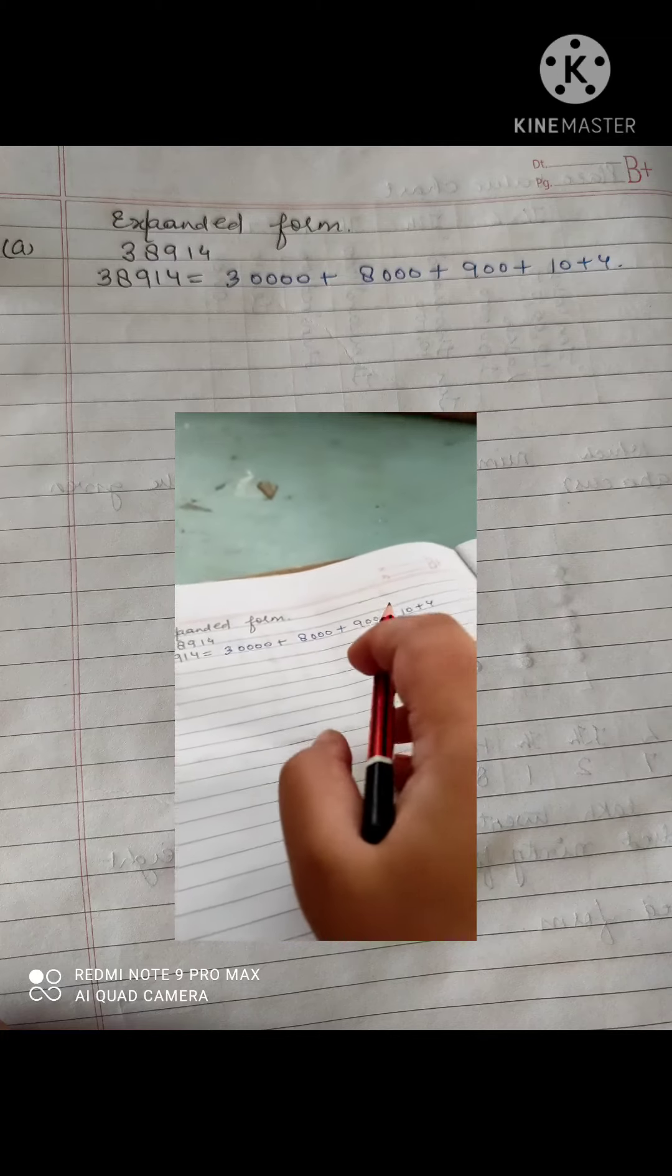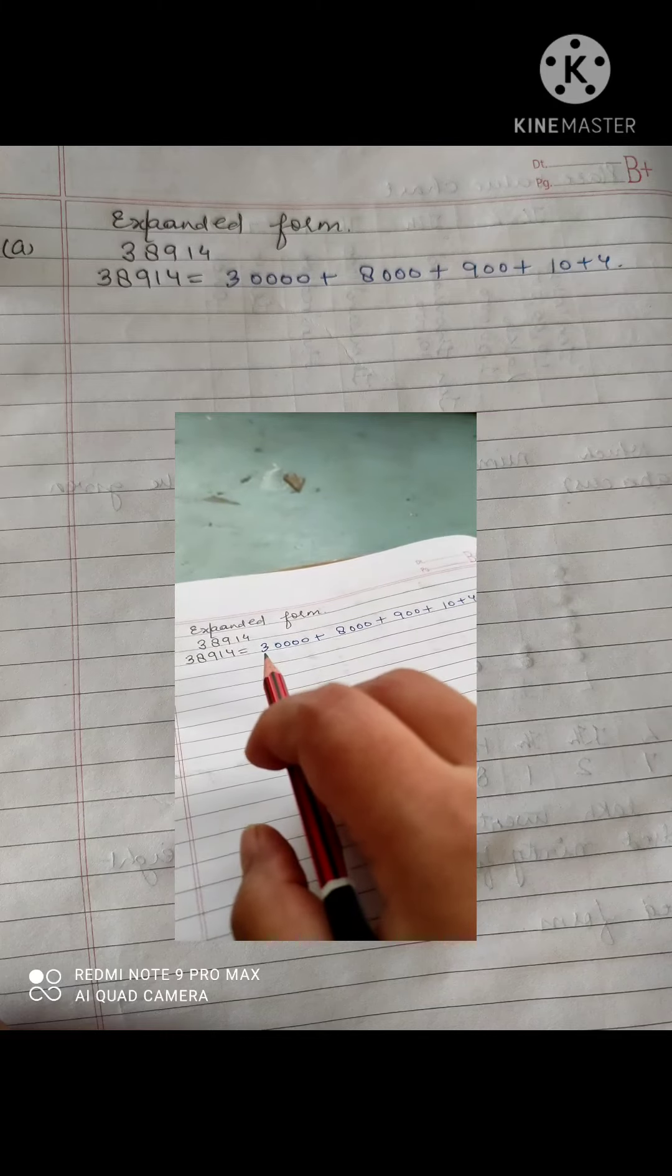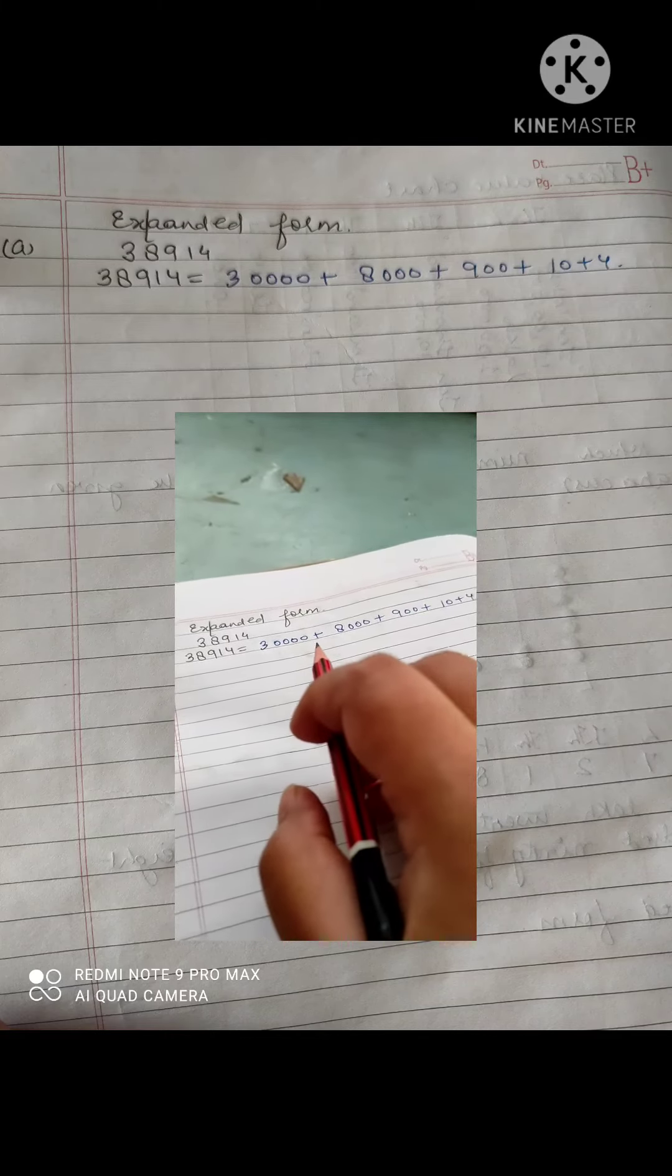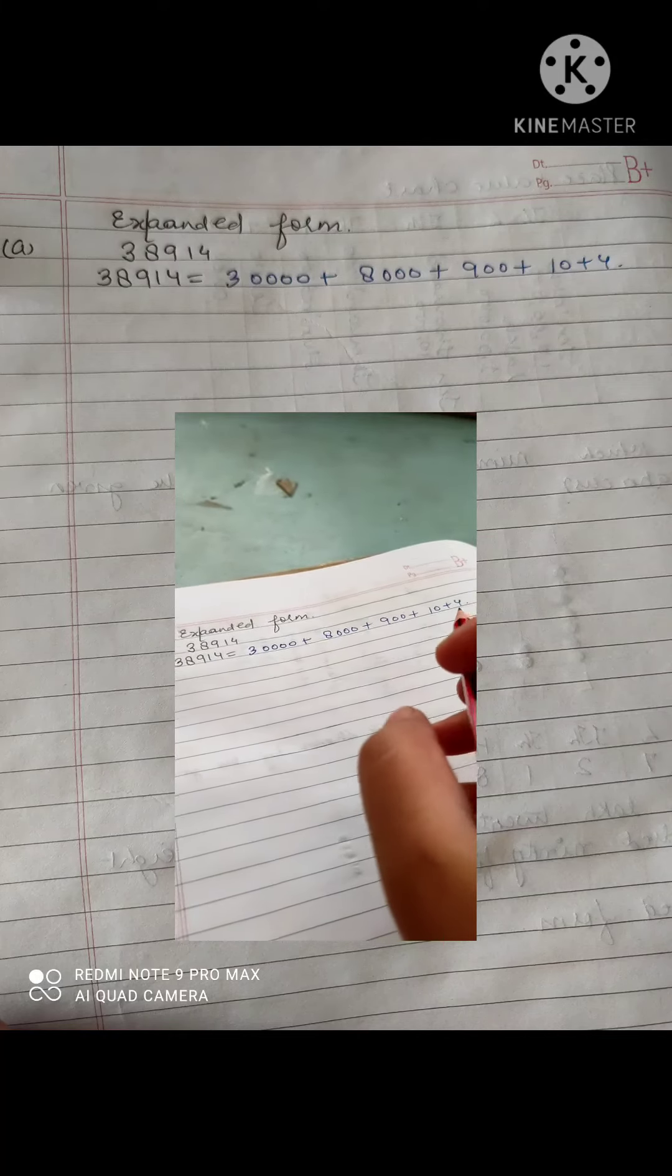As after 4 no digit is there, no zero will you put. So the answer will be 30,000 plus 8,000 plus 900 plus 10 plus 4.